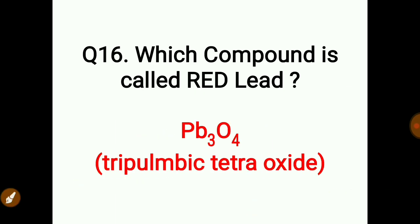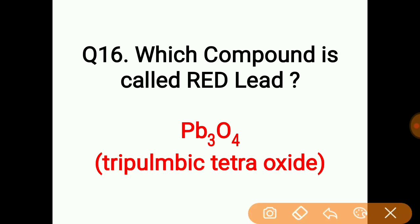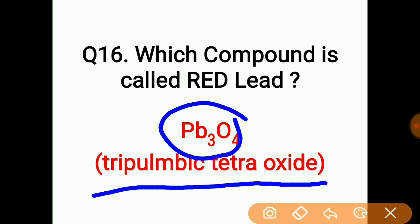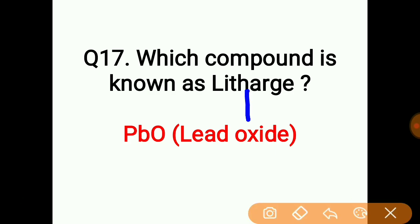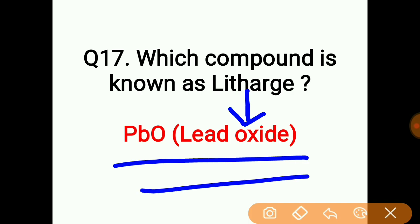The compound also called red lead is lead tetraoxide, Pb3O4. The compound known as litharge is lead oxide (PbO).